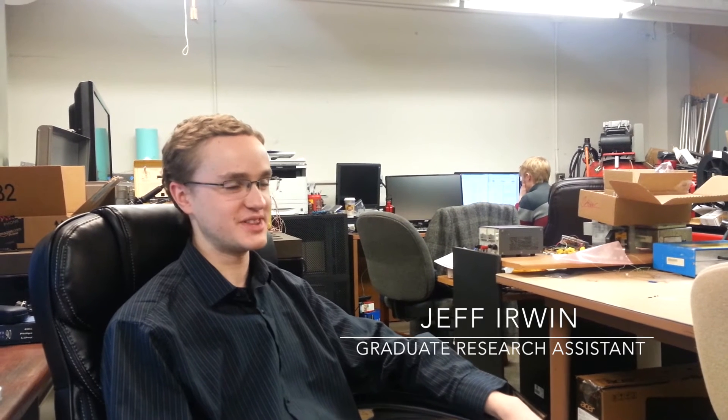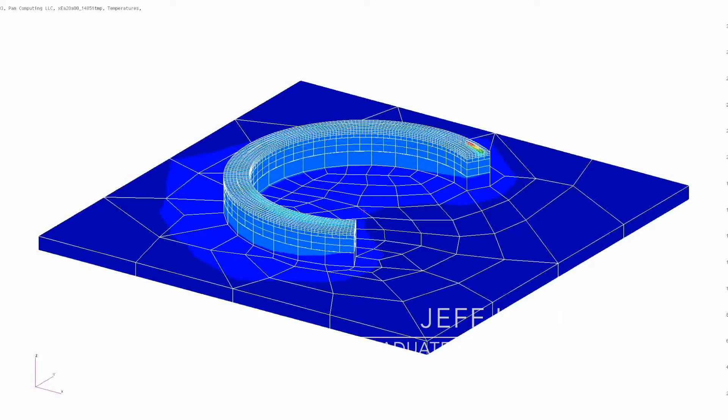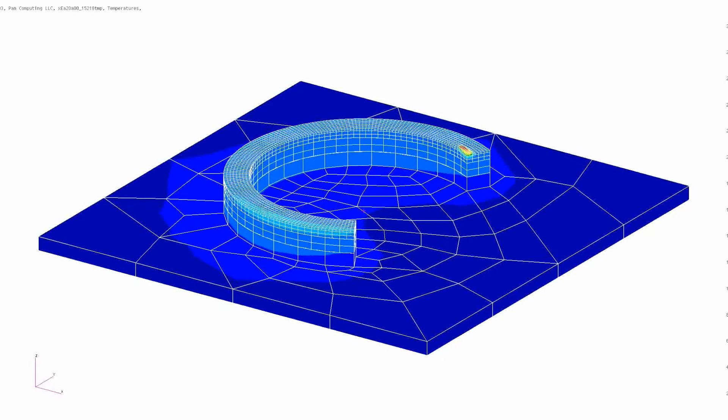We discretize the infinite dimensional vector space with an approximating finite dimensional vector space. And you're probably thinking of the three spatial dimensions as space, but really our space is temperature. So we find an approximate solution of temperature in this finite dimensional space, and that represents the temperature at every point in a three-dimensional 3D printed part.